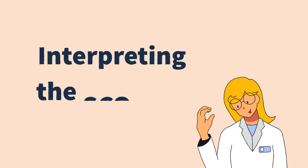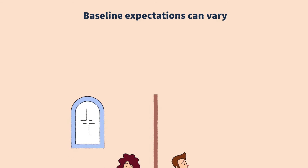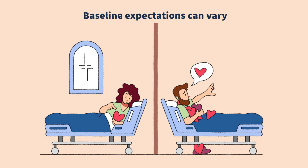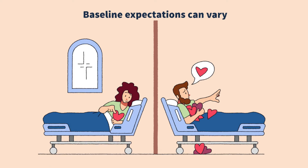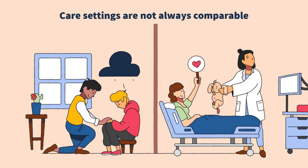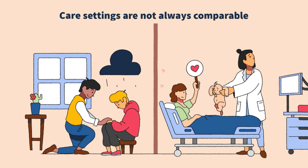Interpreting your results should be done carefully. When reviewing scores, there are four key things to remember. One, baseline expectations of compassion can vary — some patients have low expectations, some incredibly high. Be careful in comparing between patients, units, and organizations. Two, care settings aren't always comparable. Bad news delivered by a highly compassionate palliative care team may score lower than a labor and delivery care team that delivers good news but doesn't do so with compassion.